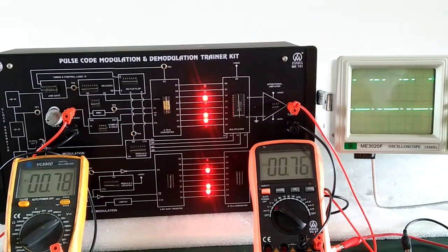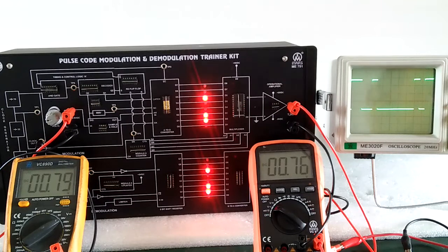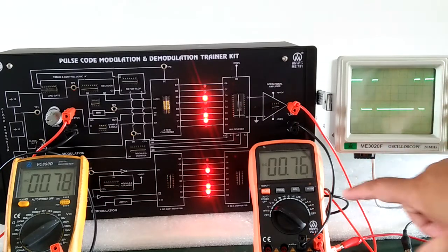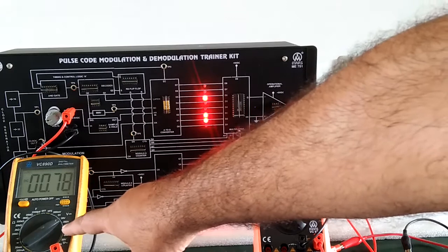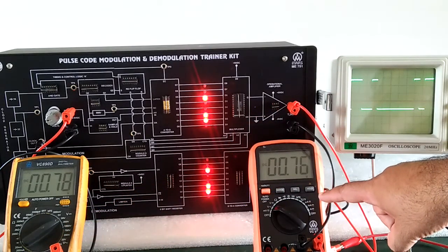Here we can see the output of the PCM at the CRO. And here is the input voltage, and here after demodulation we get the voltage.